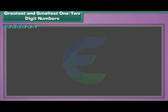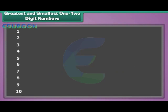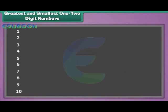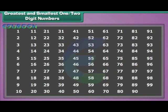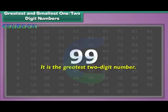Greatest and smallest one- or two-digit numbers. The last one-digit number is nine — it is the greatest one-digit number. The first two-digit number is ten — it is the smallest two-digit number. The last two-digit number is ninety-nine — it is the greatest two-digit number.